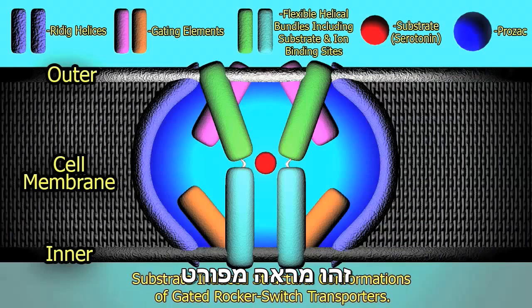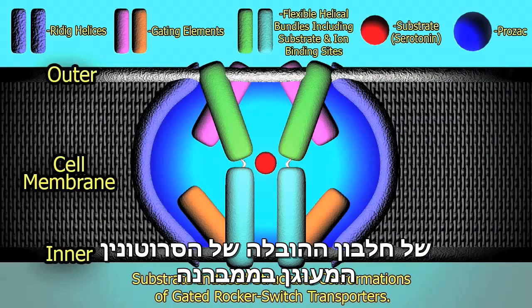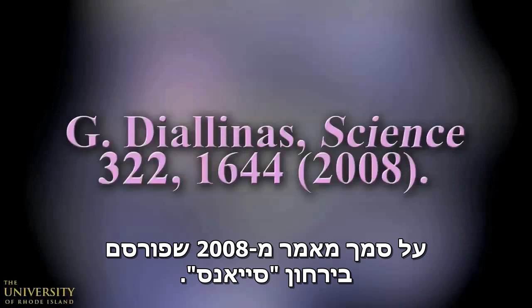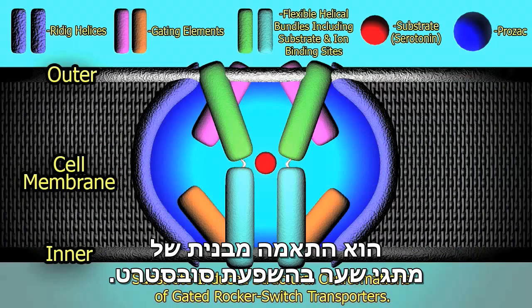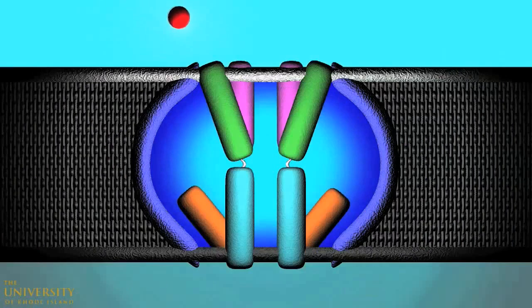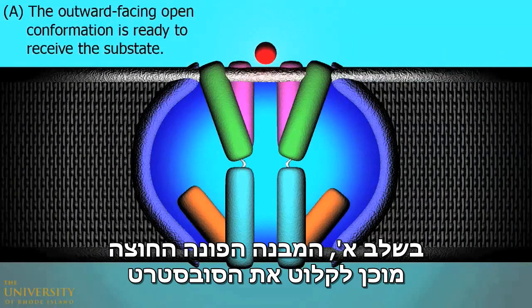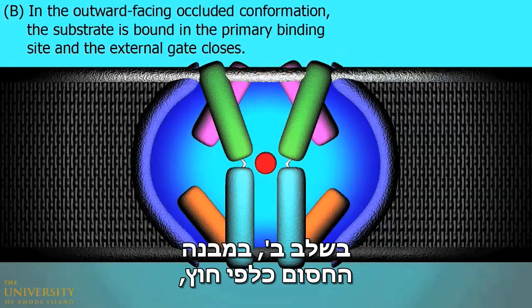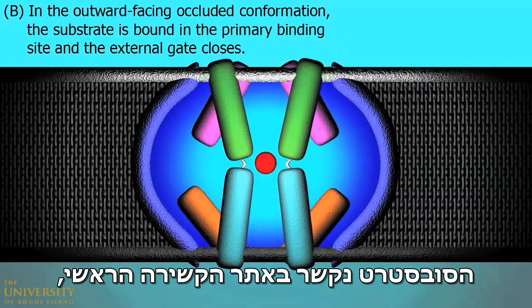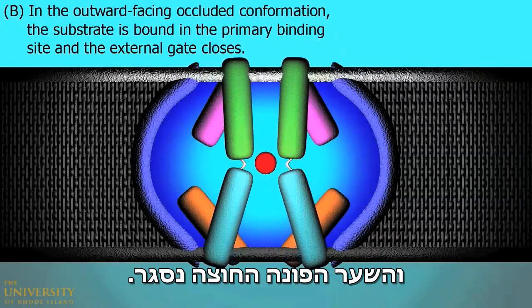Here is a detailed view of the membrane-bound serotonin transporter protein based on a 2008 article in Science. As you can see, this transport protein's reuptake mechanism is a substrate-induced structural confirmation of gated rocker switches. In stage A, the outward-facing open confirmation is ready to receive the substrate. In stage B, or the outward-facing occluded confirmation, the substrate is bound to the primary binding site and the external gate closes.